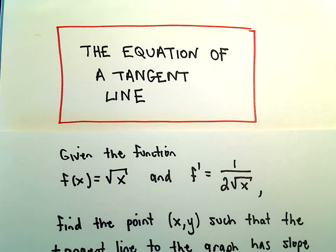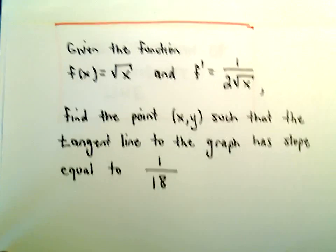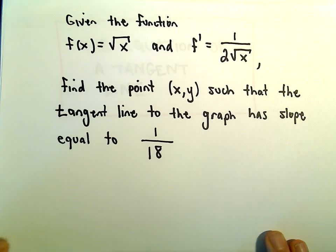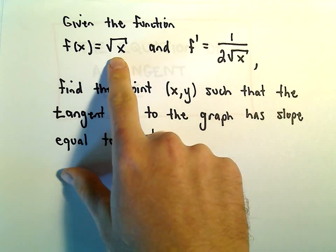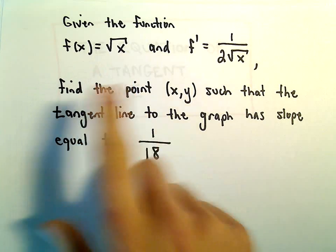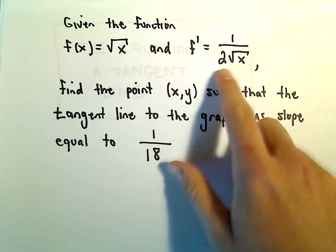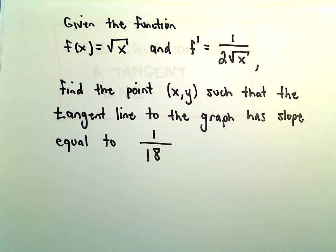Okay, so here we're going to do another problem related to the equation of a tangent line. This is a very common type of problem. You've got some function, in this case, square root of x. The derivative of square root of x is 1 over 2 times the square root of x.